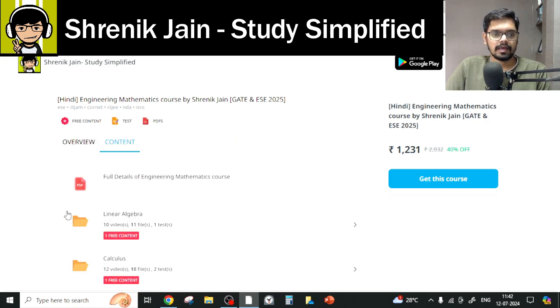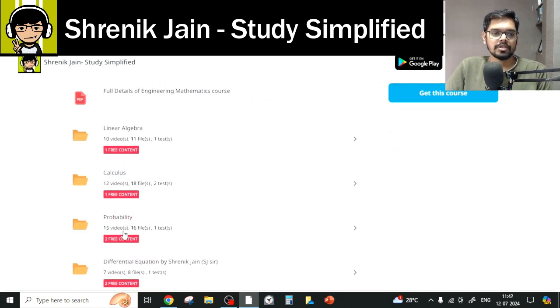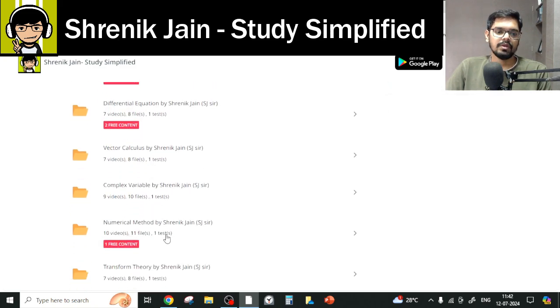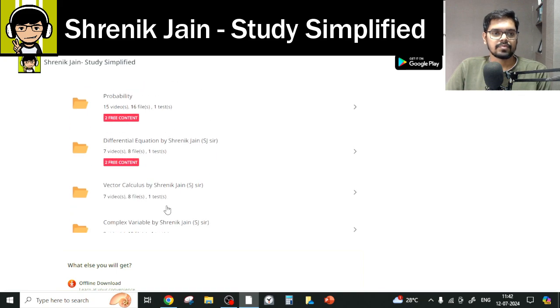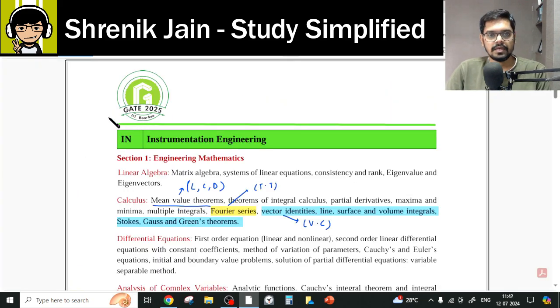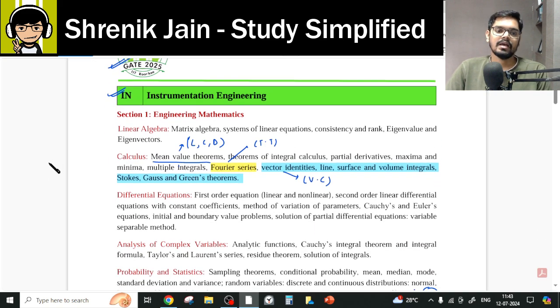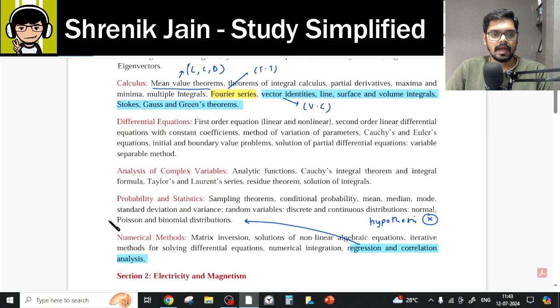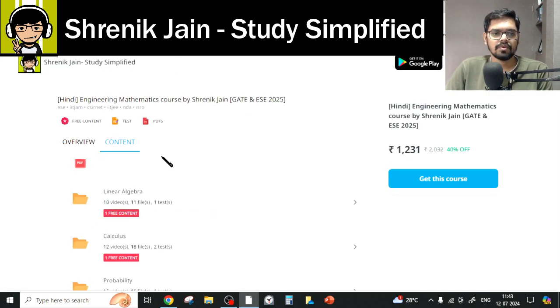In total, I have taught eight chapters: linear algebra, calculus, probability, differential equation, vector calculus, complex variable, numerical method, and transform theory. And if you check your official syllabus, you might be thinking, oh sir, as per IIT Roorkee GATE 2025 instrumentation syllabus, I have only six chapters. One, two, three, four, five, and six. So I should study six chapters out of it. That is incorrect. That is the trap. Why? Let us see.